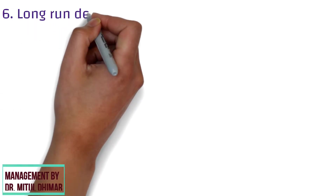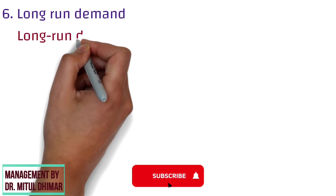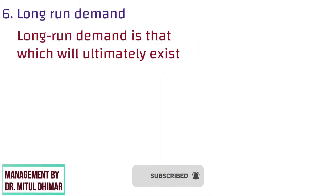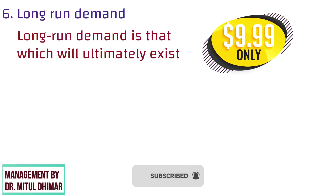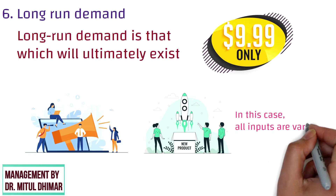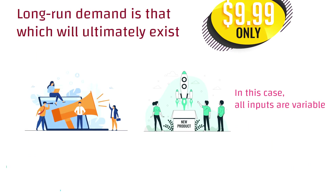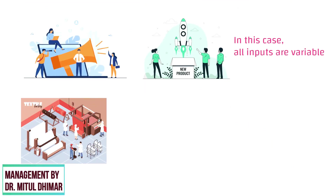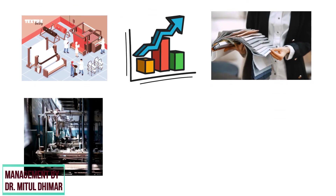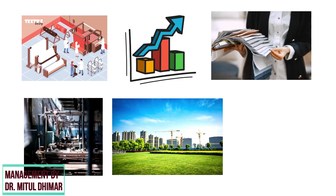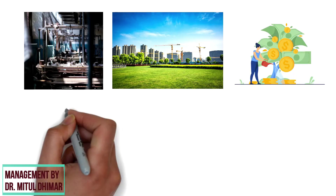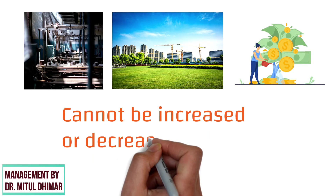Number 6: Long Run Demand. Long Run Demand is that which will ultimately exist as a result of changes in pricing, promotion, or product improvement. In this case, all inputs are variable. For example, you own a textile industry, and an increase in demand cannot force you to immediately buy more machinery or more land, as these investments are made for the long run and cannot be increased or decreased overnight.